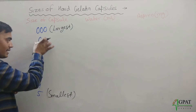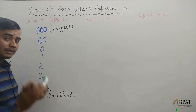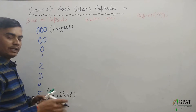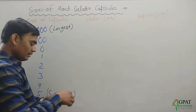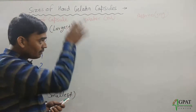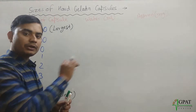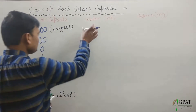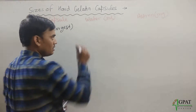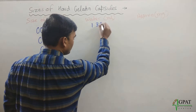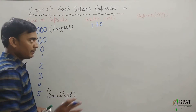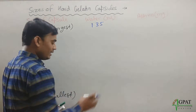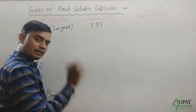All capsules have different water fill capacities. In triple zero — the largest — 1.35 ml can be filled. In double zero, 0.95 ml can be filled. In zero, 0.65 ml can be filled. In number one, 0.50 ml can be filled.